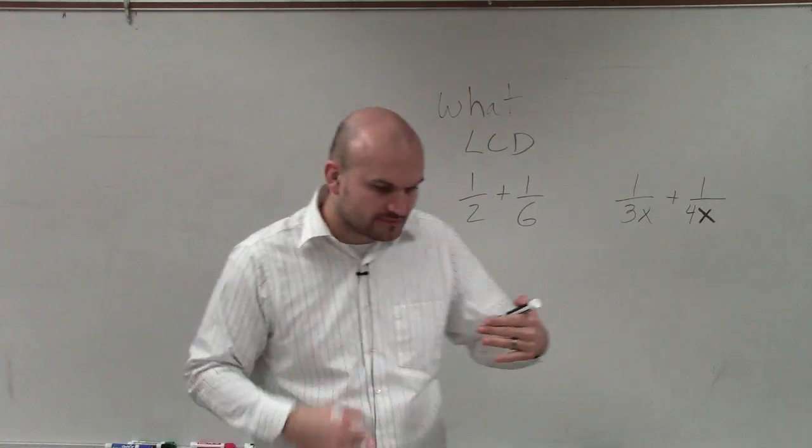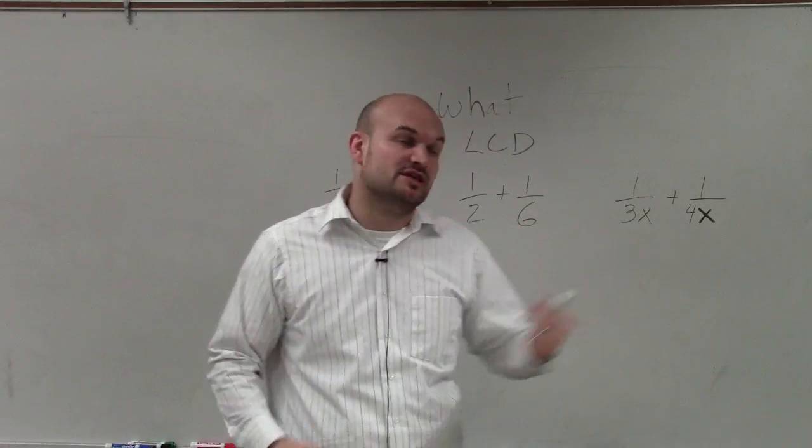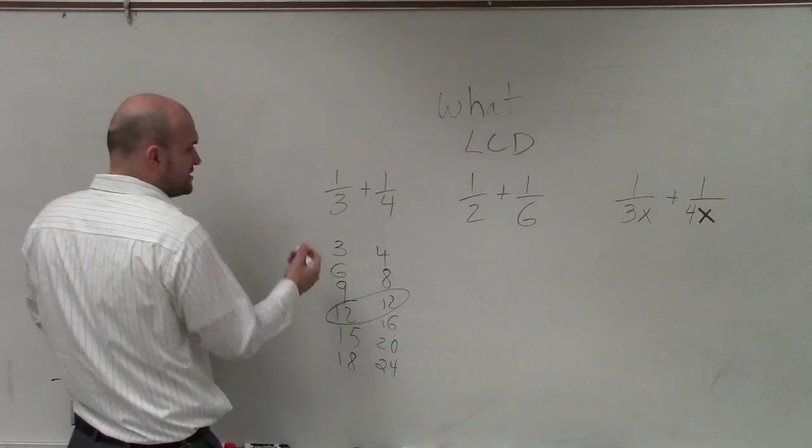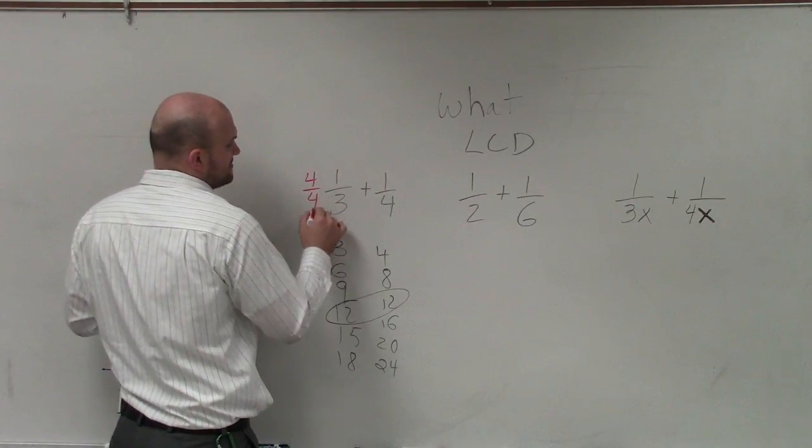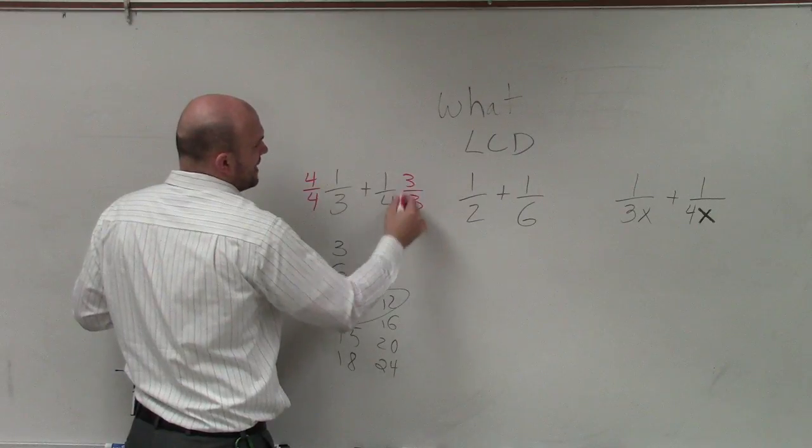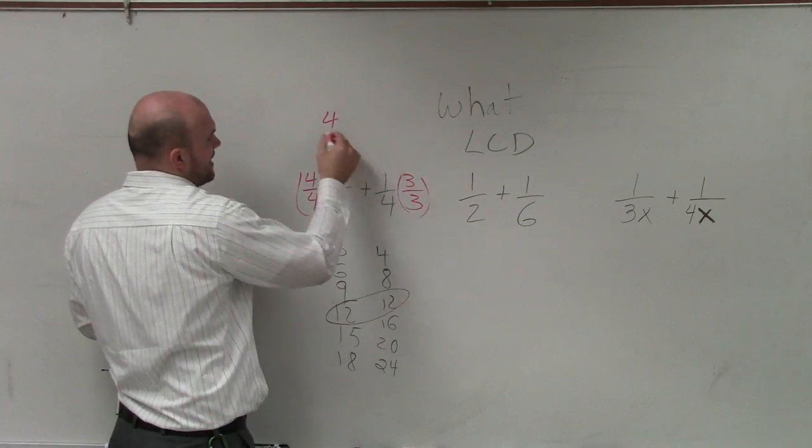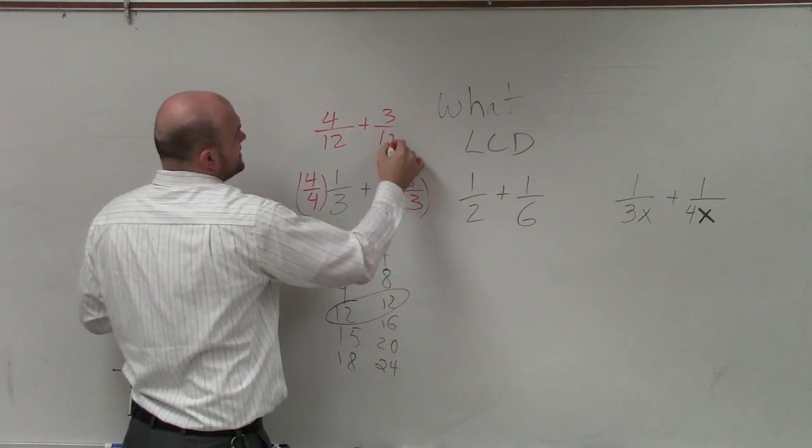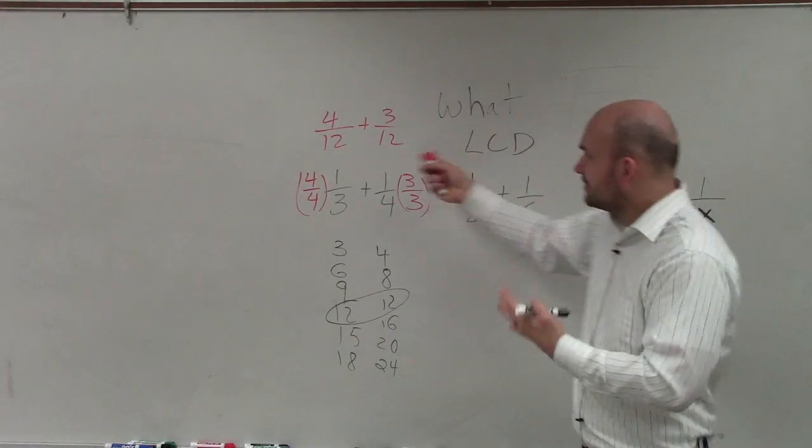So once we know what our LCD is we want to multiply each of our fractions by multipliers that are going to produce equivalent fractions but that have the same denominators. For instance, I'd multiply this by four over four and this one by three over three, therefore now I produce a fraction expression four twelfths plus three twelfths.